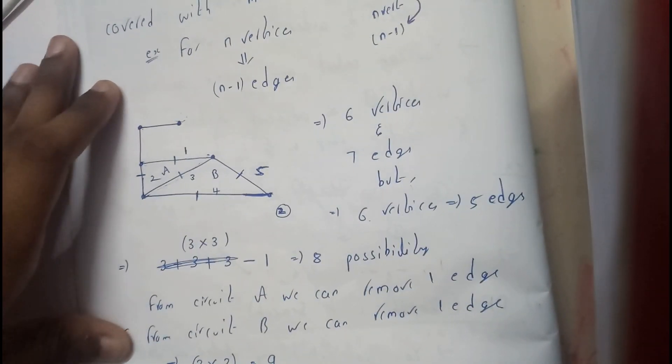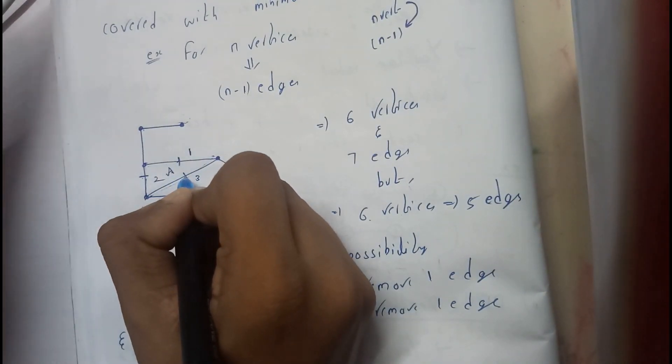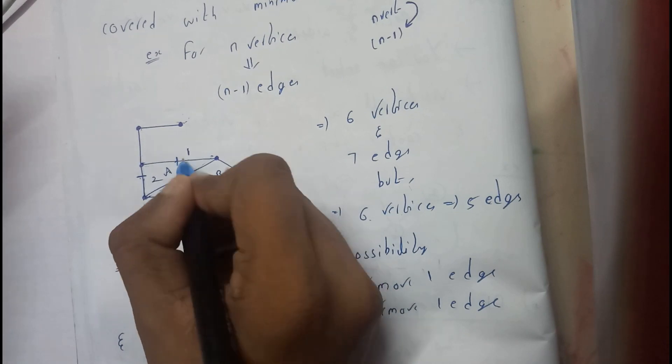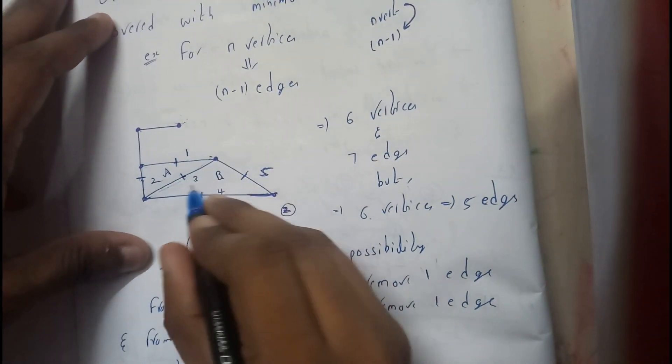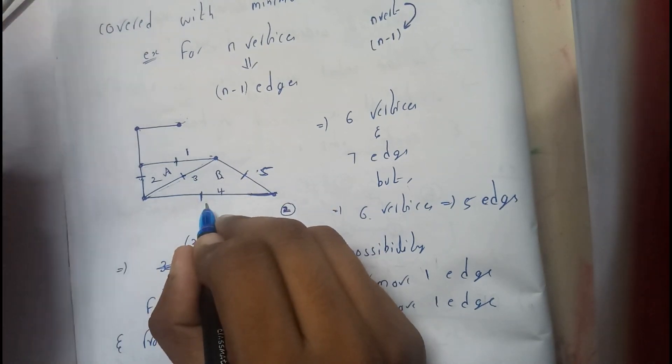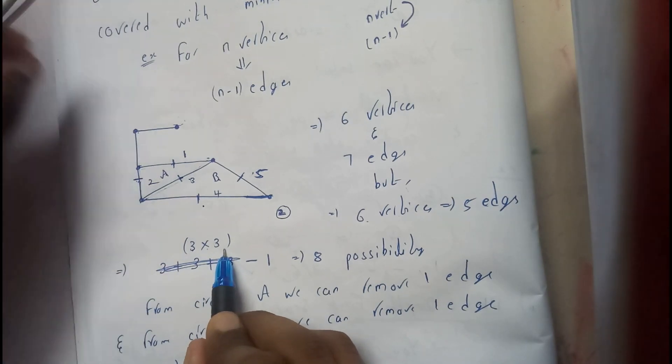A is a cycle and B is a cycle. So in A we are having 1, 2, 3 - three chances of removing: once this one, once this one, once this one. So we are having 3 possibilities, and in B we are having 1, 2, 3 - three possibilities. So total 3 into 3, 9 possibilities.